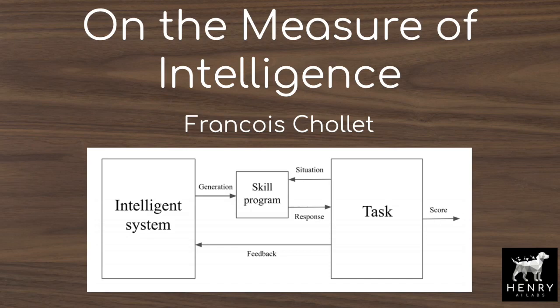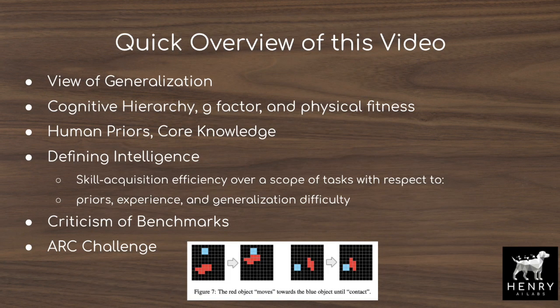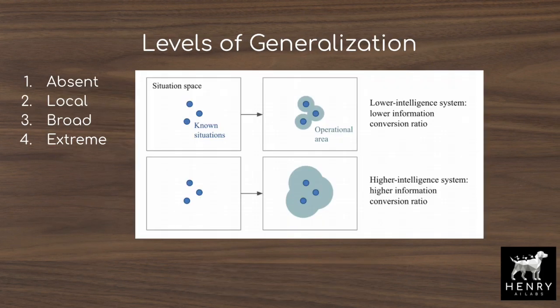This video presents some thoughts on the famous paper 'On the Measure of Intelligence' by François Chollet. It will explore the levels of generalization, the cognitive hierarchy and existence of a G-factor shared ability across different cognitive tasks, core knowledge and human priors, Chollet's criticism of AI benchmarks, and a quick introduction to the ARC challenge.